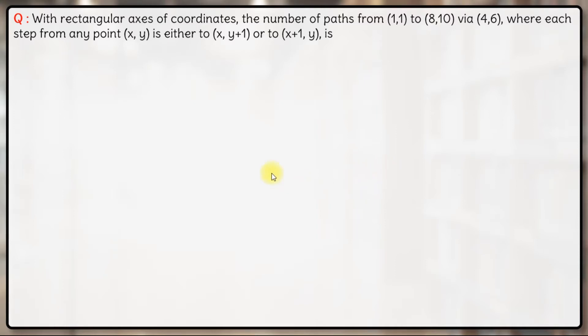Okay, so in this question what we have is with rectangular axis of coordinates. Rectangular axis of coordinates will be these coordinates. This will be point (0,0) here.